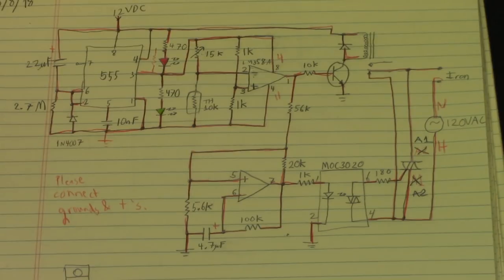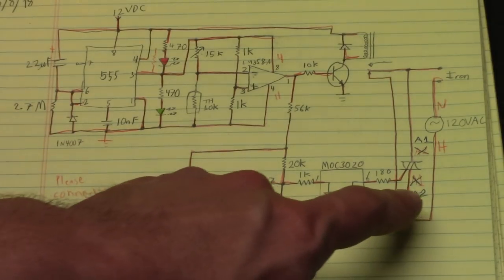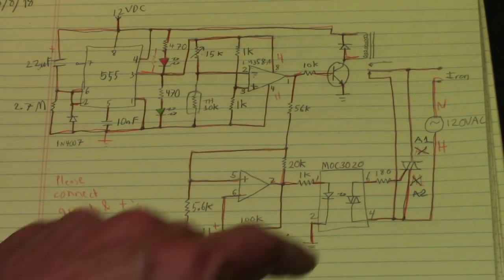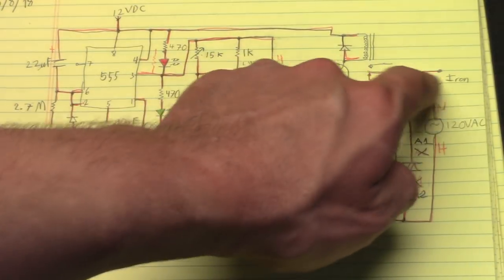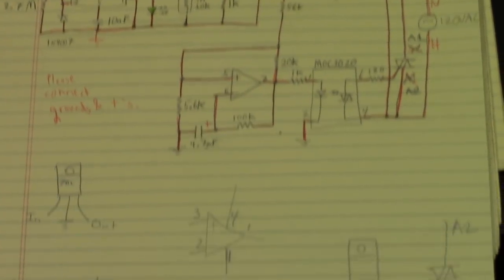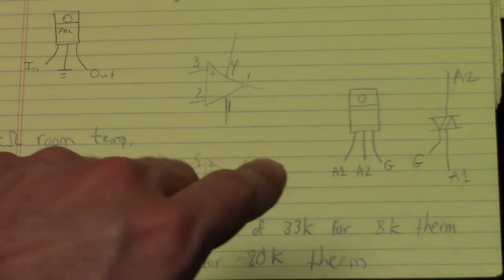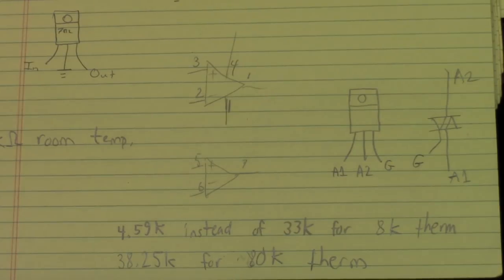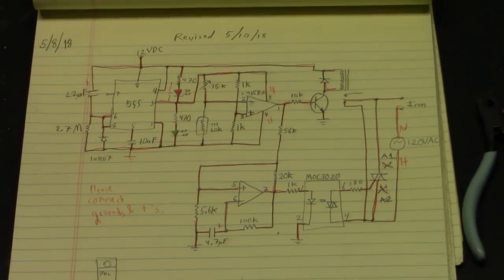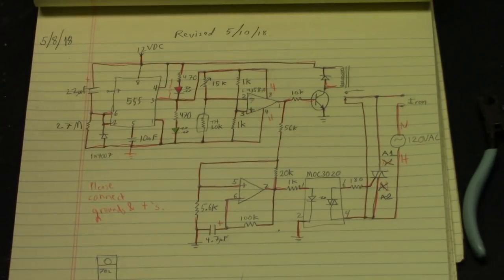I was originally hooking it up the other way and I realized wait a second, I want to switch the hot, I want to leave the neutral connected. So I did that. Later as it turned out I had to have A2 of the triac hooked up to the hot side. A1 of the triac was the area that goes out to the soldering iron. The basic pin out of the triac was A1, A2, and gate, or T1 T2 gate, main terminal 1 main terminal 2 gate. You get the drift.